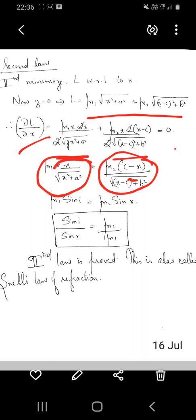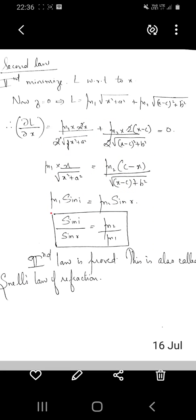Looking at the figure, X/√(X² + a²) equals sin i, giving mu1·sin i = mu2·sin r, or sin i/sin r = mu2/mu1. So the second law is proved.